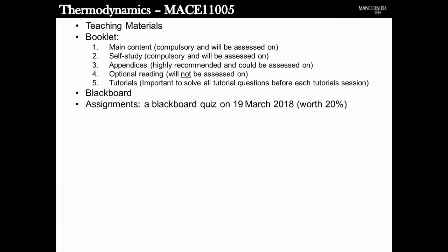Regarding assessment: you've got one quiz on the 19th of March worth 20%, and the remaining 80% is a normal two-hour exam in May. The quiz will be a Blackboard multiple-choice quiz; you can access it anywhere on campus using the University of Manchester's IP. It's open book, questions are randomised so you won't get the same questions as your friends, and there's a strict time frame. You'll get your score and feedback very quickly.